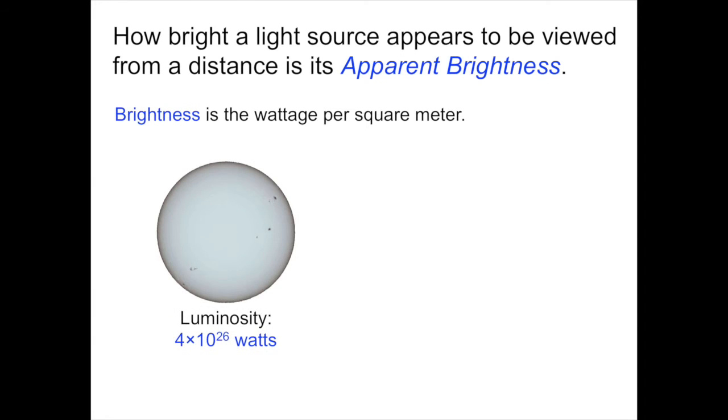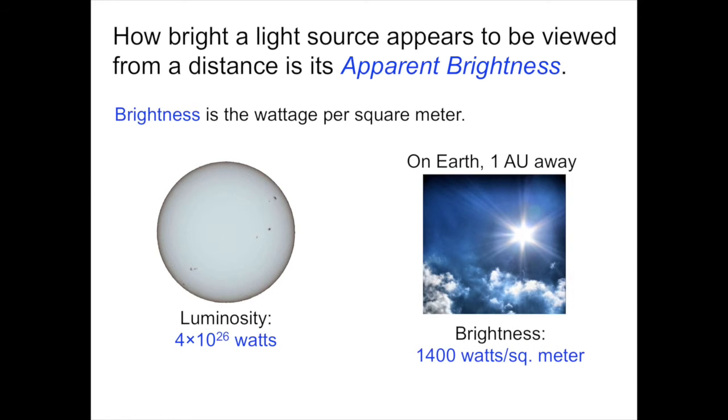For example, the luminosity of the sun, the wattage right up front and in your face of the sun, is about 4 times 10 to the 26 watts. However, once we go 150 million kilometers away, one astronomical unit, the brightness of the sun is 1400 watts per square meter. It's this energy that warms the surface of our Earth.